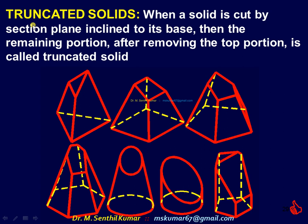Now we see about the other type — truncated solid. When the solid is cut by a section plane inclined to its base, then the remaining portion after removing the top portion is called truncated. You will get truncated solids for both pyramid and prism: truncated pentagonal pyramid, truncated square pyramid, truncated hexagonal pyramid, truncated cone, truncated cylinder, and truncated pentagonal prism. So you will get a truncated solid even for the prism — for both prism as well as pyramid.